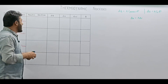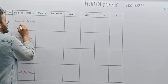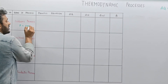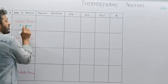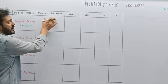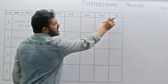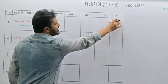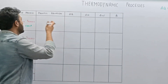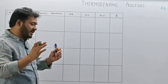The first one we have is the isobaric process. Isobaric means pressure is constant. So if pressure is constant, what will be the process equation? What will be the values? We will eventually understand the process in a complete way.